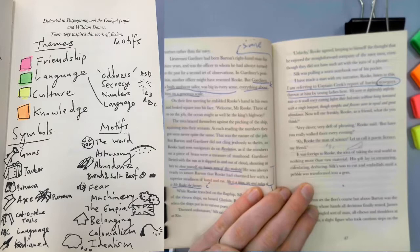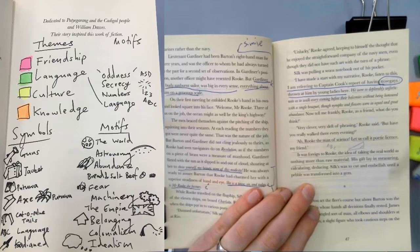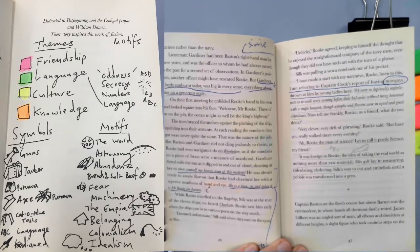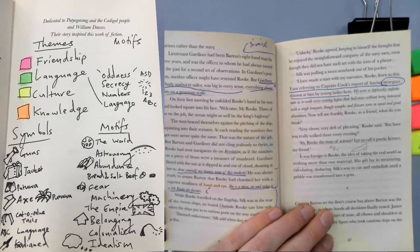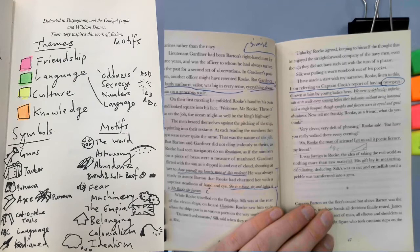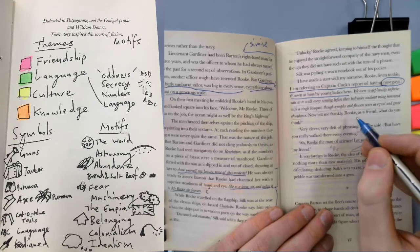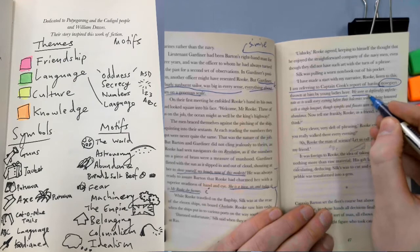Page 47, I am referring to Captain Cook's report on having nosegays thrown at him by young ladies here. So nosegays basically, from memory, are like a handkerchief that you put something nice smelling on so that you can cover up. I believe back then they believed it sort of defended against disease. So during plague years people would walk around with things over their noses and more practically people stank because they didn't wash themselves back then. So hence nosegays were your way of protecting yourself from the stinky world.